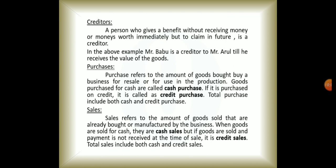After purchases comes sales. Sales means that goods which have been purchased or manufactured have to be sold. Sales refers to the amount of goods sold. Sales are of two types: the first is cash sales — if the goods are sold on a cash basis they are called cash sales — and the second is credit sales.